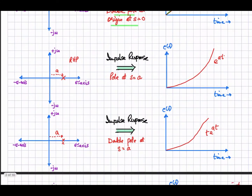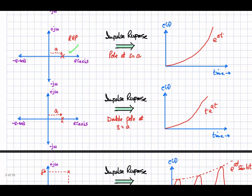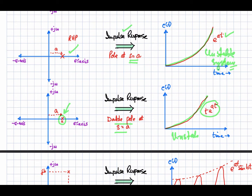Now consider a pole in the right half plane on the real axis — one pole at s equal to a. The impulse response is e raised to the power at, which is ever-increasing, so again this is an unstable system. Similarly, repeated poles at s equal to a give an impulse response that is also ever-increasing and unbounded, so the system is unstable.